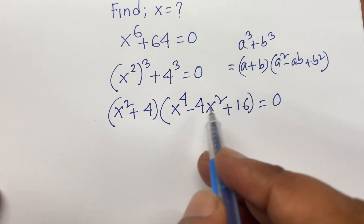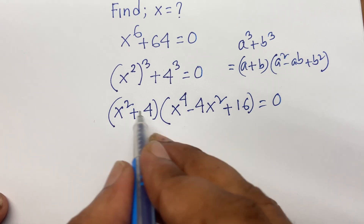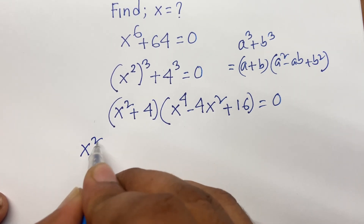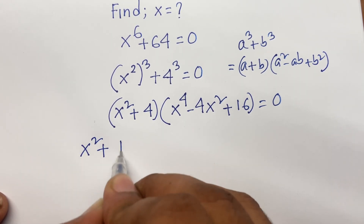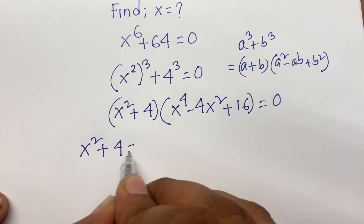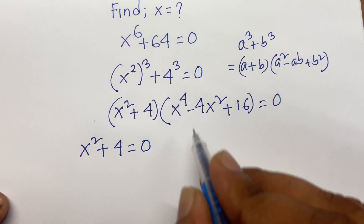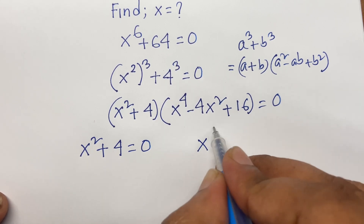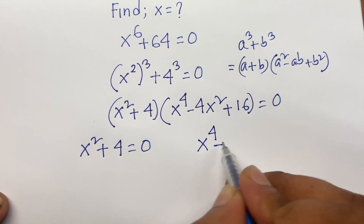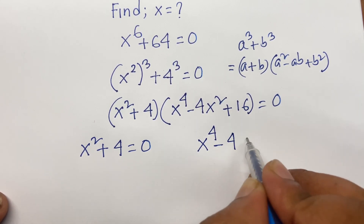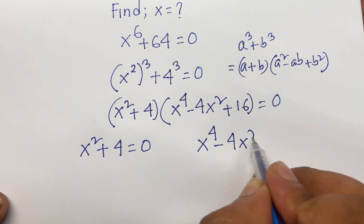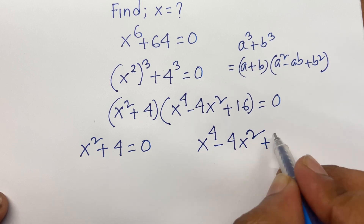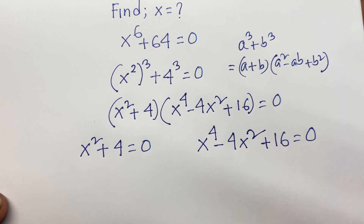There are two terms. Our first term gives x squared plus 4 is equal to 0. In the other case, x to the power 4 minus 4x squared plus 16 is equal to 0.